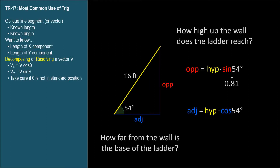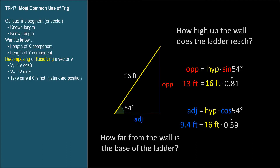The sine of 54° is about 0.81, which means the red side is 81% of the length of the hypotenuse, or 13 feet. The cosine of 54° is about 0.59, so the blue side is 59% of the length of the hypotenuse, or 9.4 feet. To find the length of right triangle sides, multiply the hypotenuse by the trig function that corresponds to the side you're interested in — sine for the side opposite the angle, cosine for the side adjacent to the angle.